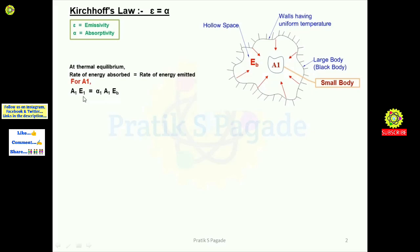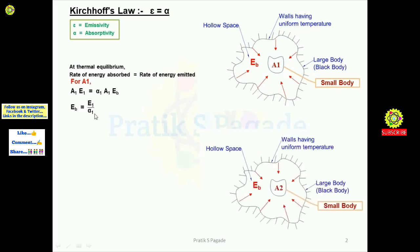Now we will simplify this — A1 cancels out on both sides, so we are left with eb = e1 / alpha1. That is, the emissive power of the black body is equal to the emissive power of the small body divided by the absorptivity of the small body.